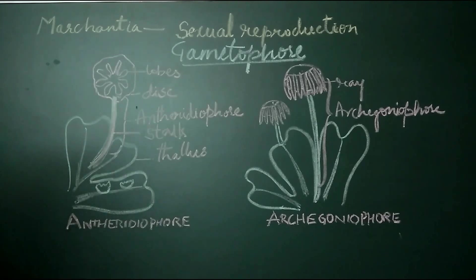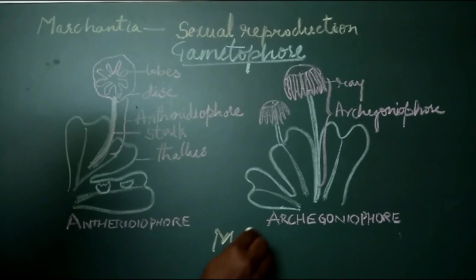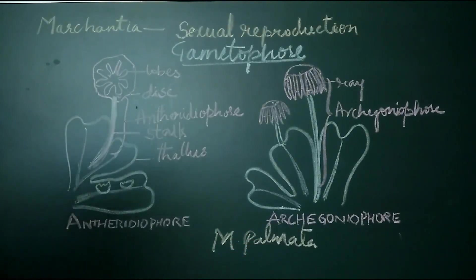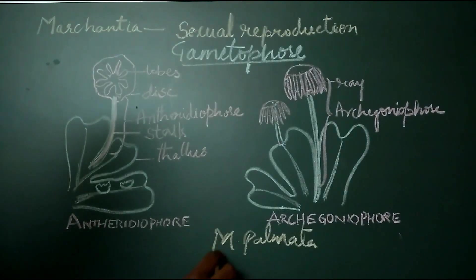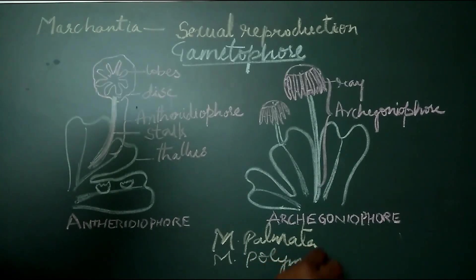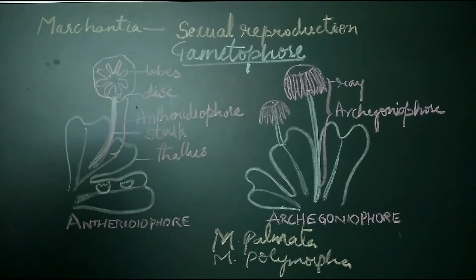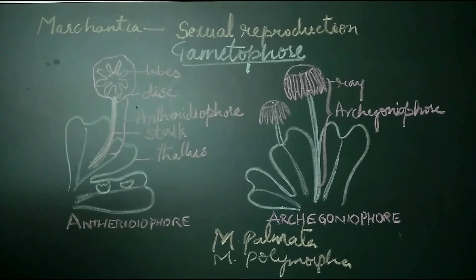However, in Marchantia palmata and Marchantia polymorpha, both antheridia and archegonia have been found in the same receptacle. Such receptacles are called androgynophores.